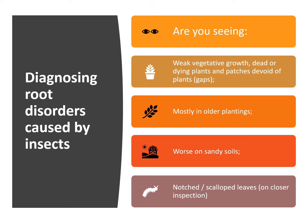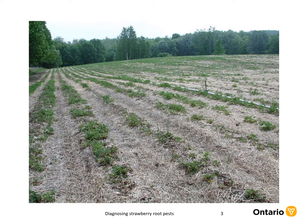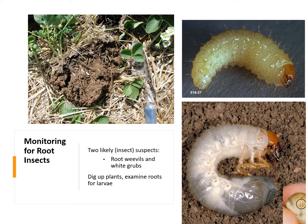We will begin with insects that may be damaging your strawberry roots. When you're in the field you might see patches of weak vegetative growth, dead or dying plants, or gaps in the field. This could be a result of a root insect pest, especially if the damage is in an older planting, if it is worse on sandy soils, and if there are notched leaves. This is an example of a field where I would suspect insect damage — a weak, patchy field with limited growth in the bottom right compared to healthier growth further down.